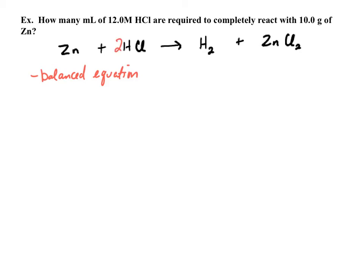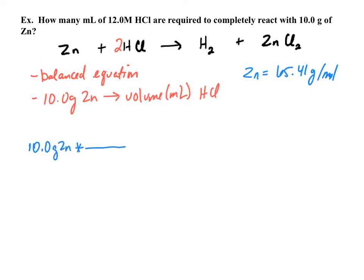Now what we need to figure out is what we have and where we're going. We know that we have 10.0 grams of zinc, and we're asked what volume in milliliters we need of HCl. So we need to start off by knowing what the molar mass is of zinc, and that happens to be 65.41 grams per mole. We start with 10.0 grams of zinc and multiply this by the molar mass.